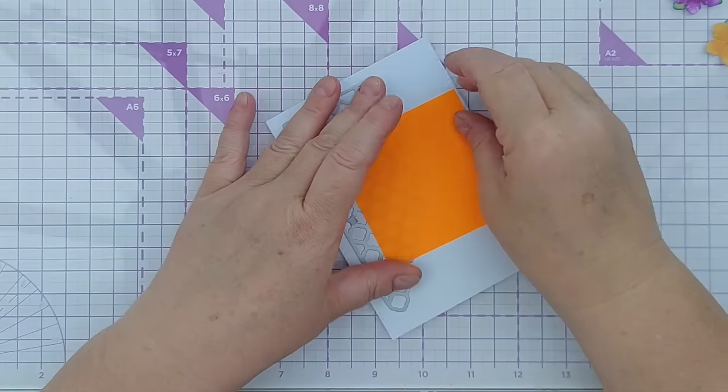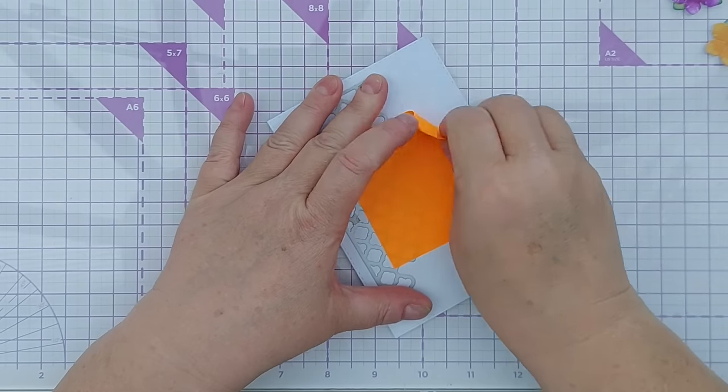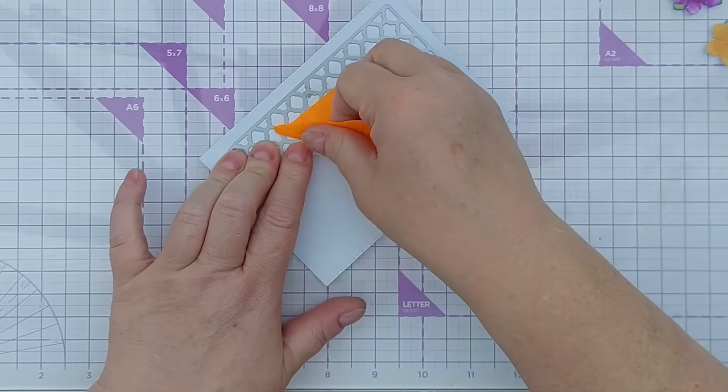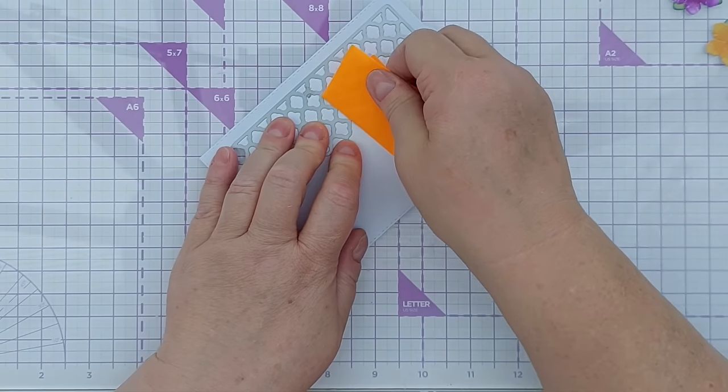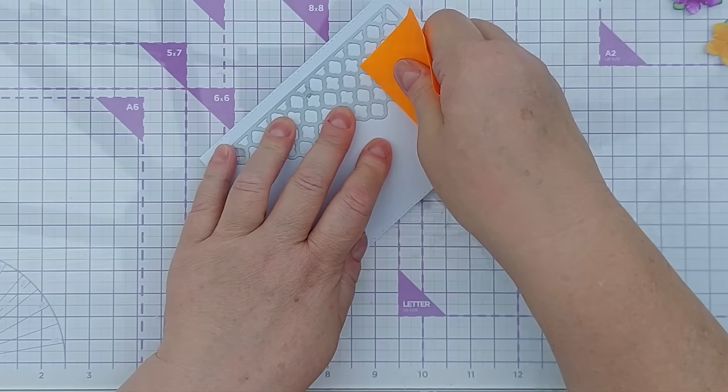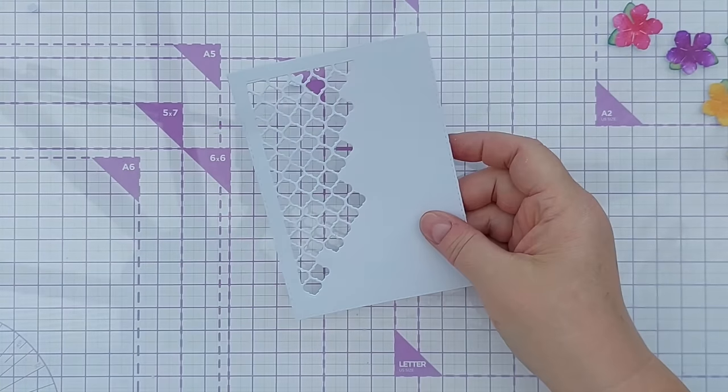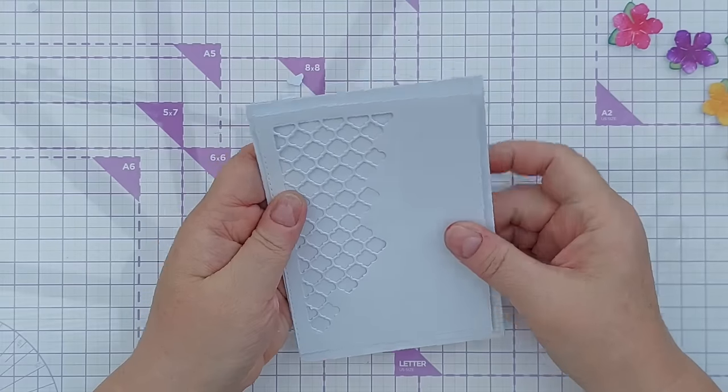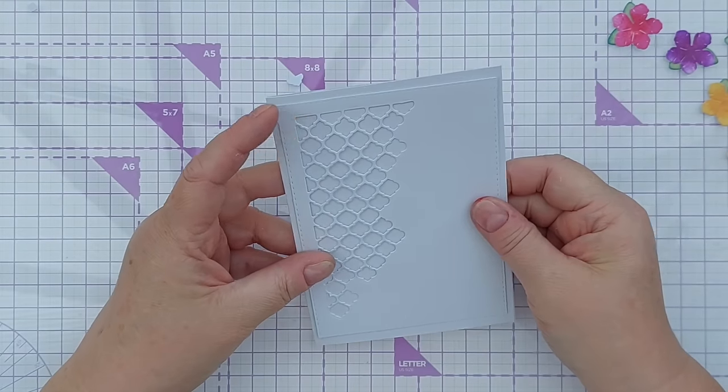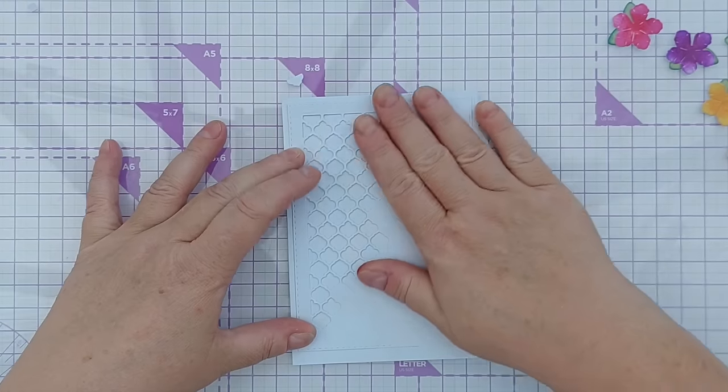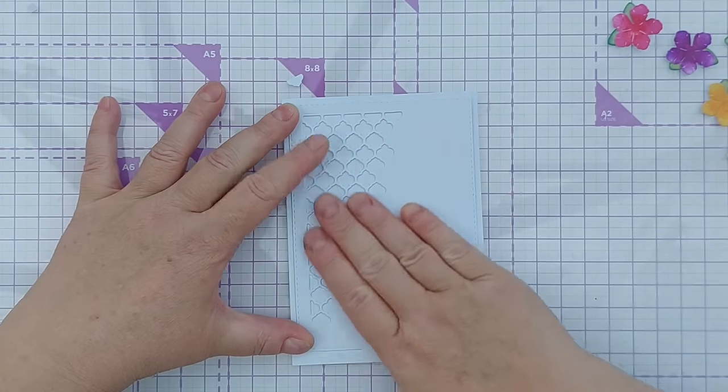I find with intricate dies like this it can be helpful to run it through the die cutting machine twice or add an extra bit of card to act as a shim, just to increase the pressure slightly. I'm happy with that. I'm going to stick that on the front of my card panel. I'm not going to put any foam in between. I think I don't need physical dimension, I think that's got enough texture and dimension.